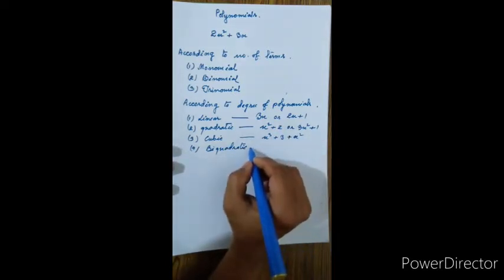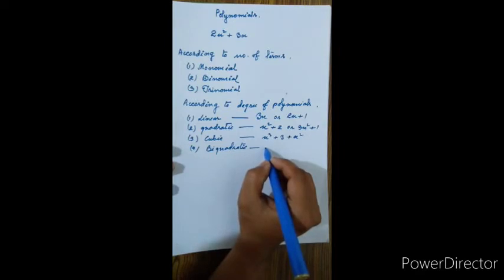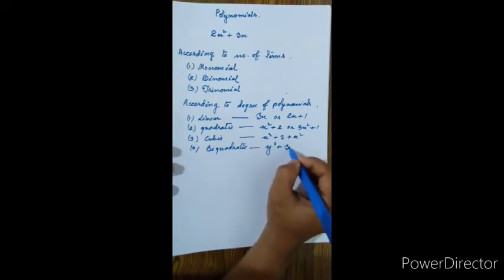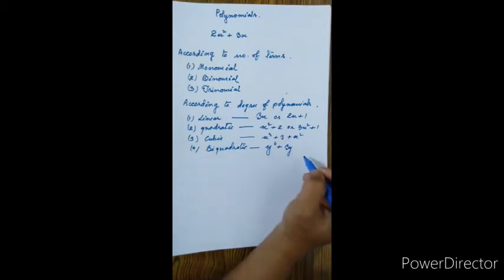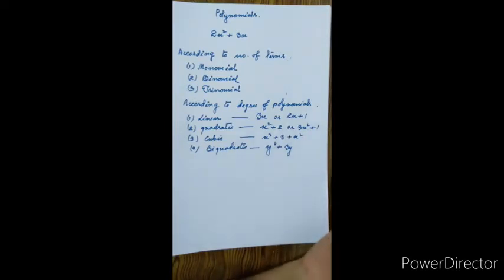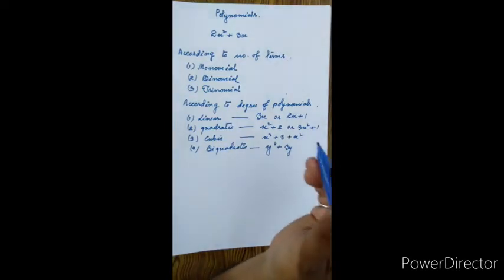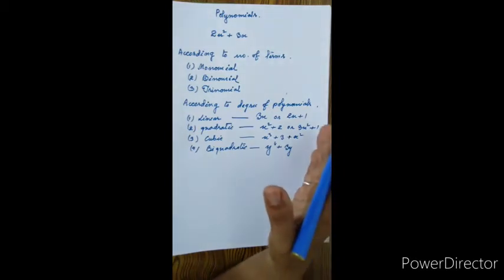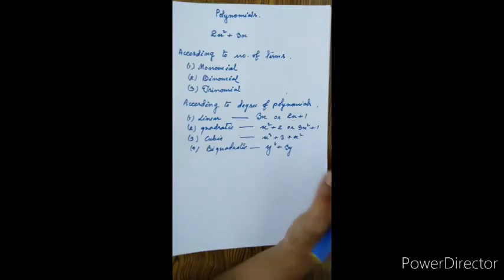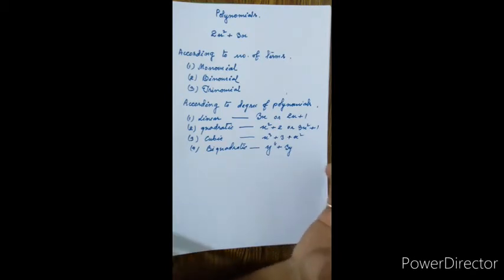According to the degree: quadratic has power 2, cubic has power 3, biquadratic has power 4. If the degree is four, it is biquadratic. If it is power five, six, seven, eight — we trace the degree to find the correct classification. For example, a polynomial of degree five or degree six is named accordingly.